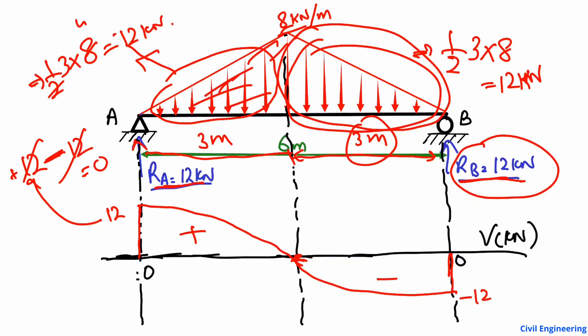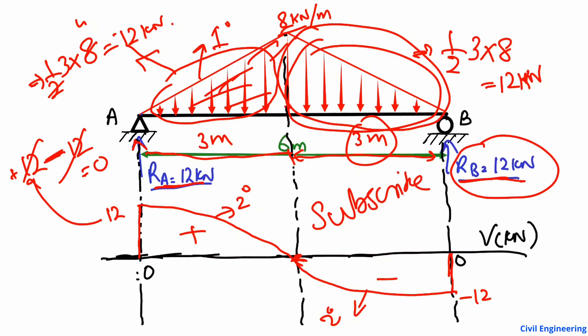This is a simple and easy way to draw the shear force diagram for this kind of beam. Keep in mind: because the applied load is linear (first degree), the shear force diagram will be a second-degree parabolic curve on both halves. Hope you guys understand — don't forget to subscribe for daily engineering videos, and please comment your questions. Thank you for watching.